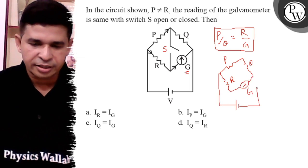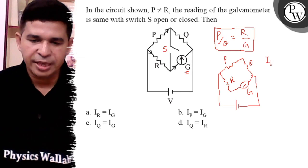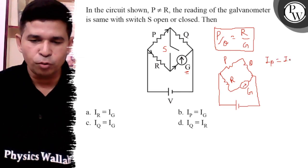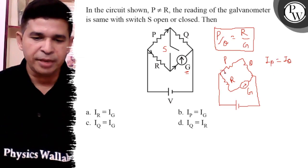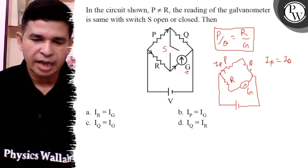Same current means Ip is equal to Iq because both are in series.